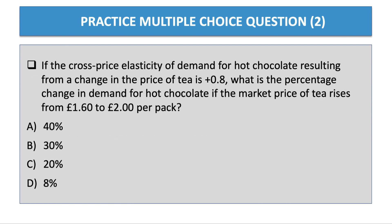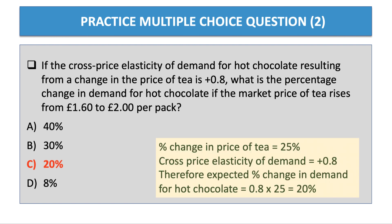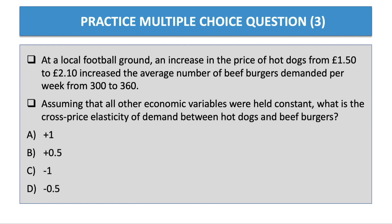Question two: If the cross price elasticity of demand for hot chocolate resulting from a change in the price of tea is +0.8, what is the percentage change in demand for hot chocolate if the market price of tea rises from £1.60 to £2.00 per pack? The answer is C — 20%. There has been a 25% increase in the price of tea (40p over £1.60). The cross price elasticity is +0.8, so the expected change in demand for hot chocolate is 0.8 × 25 = 20%.